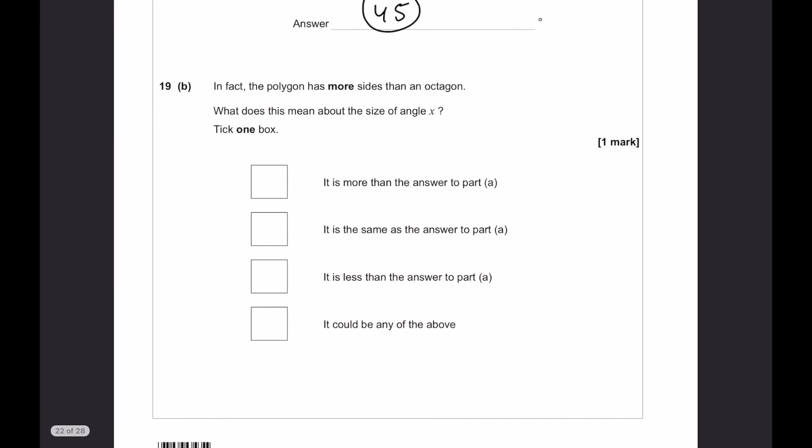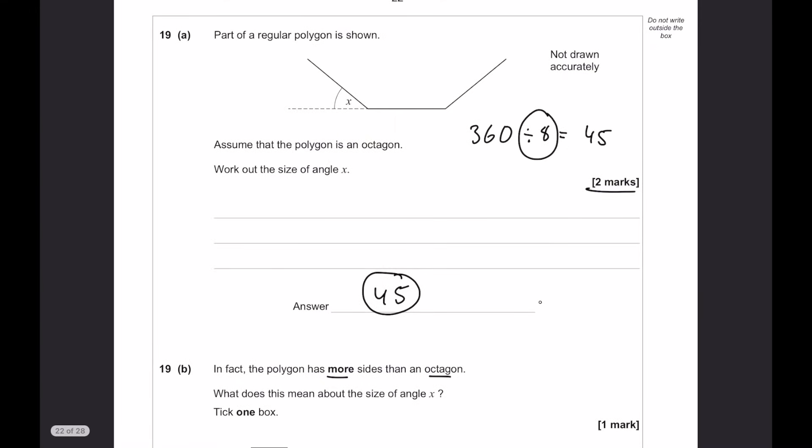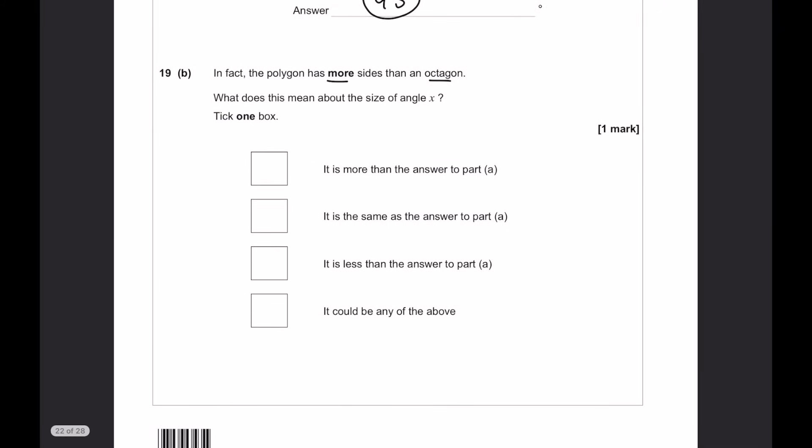In fact, the polygon has more sides than an octagon. What does this mean about the size of the angle? If it's got more sides than the octagon, that means this number up here is going to be bigger than 8, which means the overall number here is going to be smaller. So, X is going to be smaller. So, it's going to be less than.